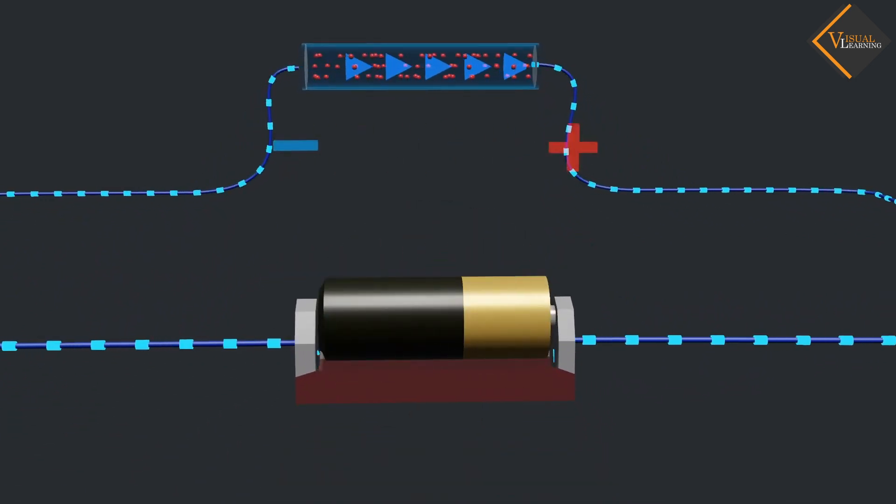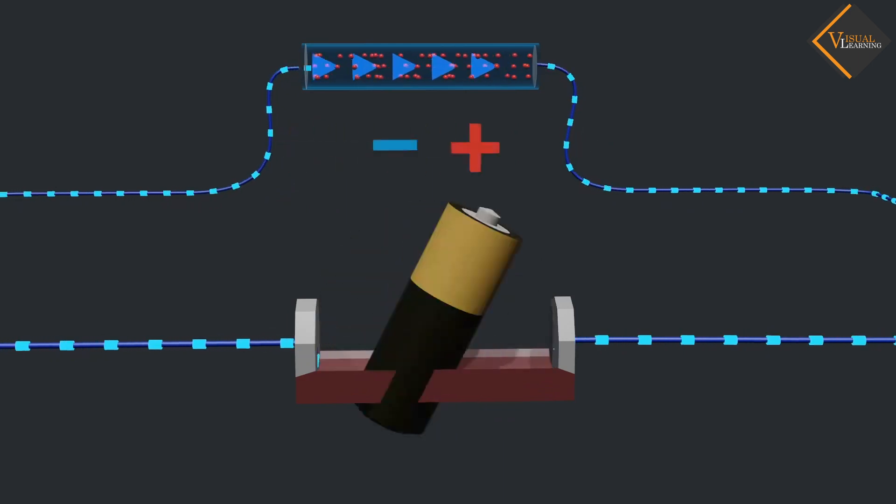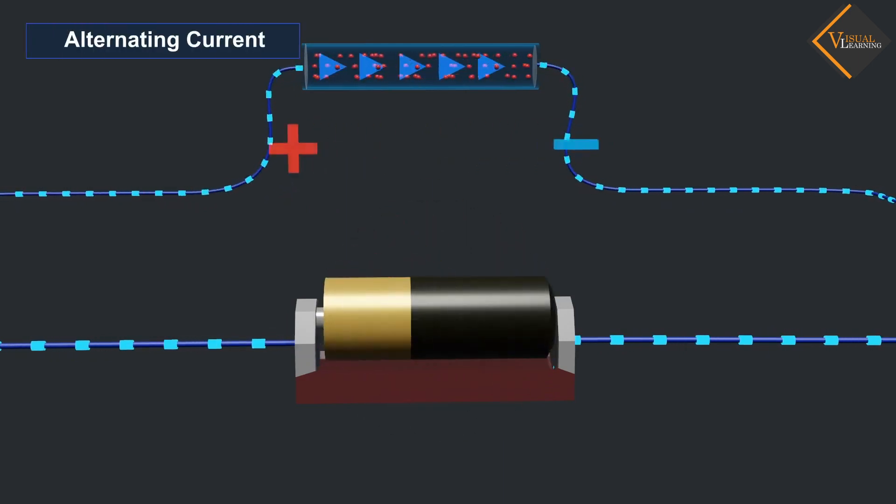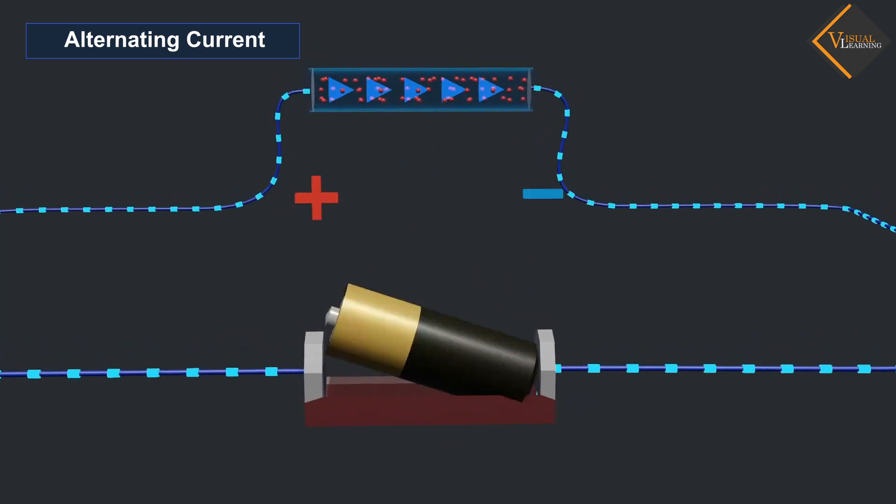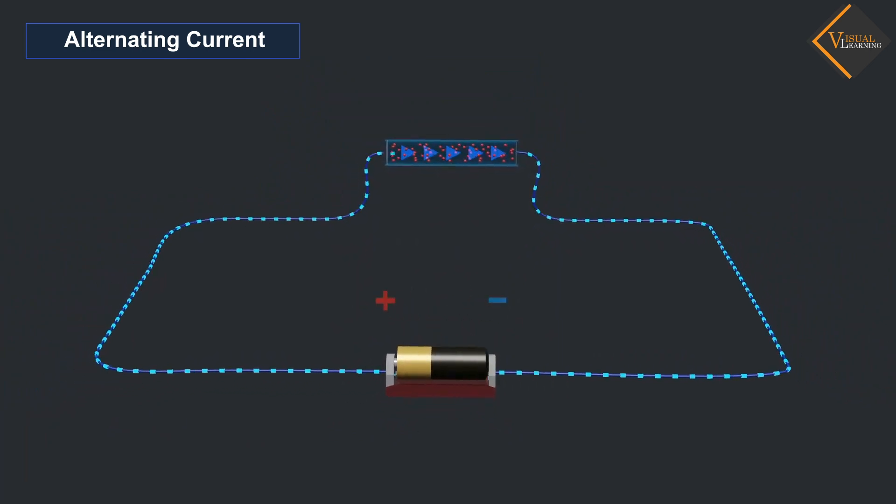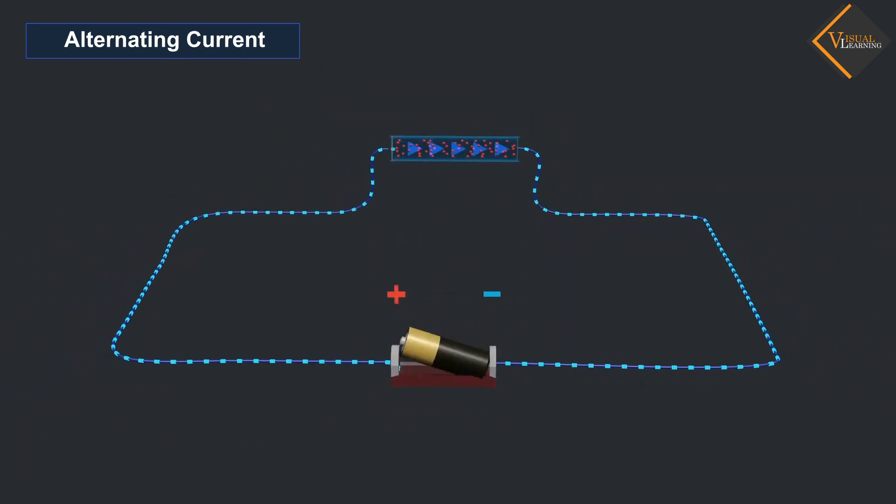If we repeat this process rapidly, the direction of current continuously changes and we call it alternating current AC. Generating alternating current is not possible with a simple battery. This is why we use an AC generator.